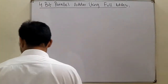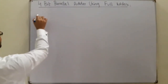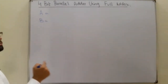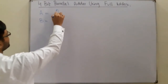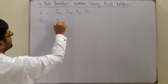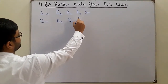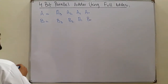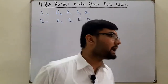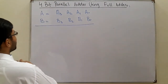For addition, let's say we have two numbers, A and B. They are four bits each, so I write them as a3, a2, a1, a0, and similarly b3, b2, b1, and b0. These are the two 4-bit numbers and we want to add them, so we have a plus sign — we're adding them.